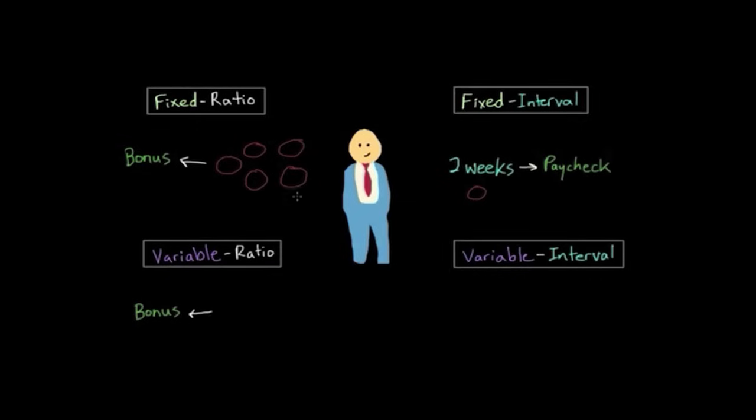So using an example we used for the fixed ratio schedule, there's a car salesman receiving a bonus for every five cars he sells. If the number needed to receive a bonus was always fixed at five, then that would be a fixed ratio schedule. But a variable ratio schedule would vary. So maybe he must sell five cars to get the first bonus, and then three cars to get the second bonus, and then seven cars to get the third bonus, and then six cars to get the fourth one, and then four cars to get the fifth bonus. If you add up all the cars sold and divide it by the five bonuses he received, you'd find out that the average number of cars sold to receive a bonus is five, which is what the fixed ratio schedule was above, five cars per bonus.